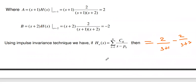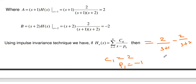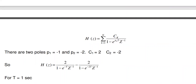Identifying the coefficients: the filter order N = 2, so k goes from 1 to 2. C1 = 2, and the first pole P1 corresponds to (S+1), so P1 = −1. C2 = −2, and the second pole P2 corresponds to (S+2), so P2 = −2.